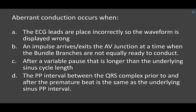Review question: 'Aberrant conduction occurs when ECG leads are placed incorrectly so the waveform is displayed wrong.' No — that's totally inaccurate. The correct answer is: 'An impulse arrives and exits the AV junction at a time when the bundle branches are not equally ready to conduct.' That is exactly the definition of aberrant conduction — the impulse still gets conducted down the bundle branches, just hits them at slightly different timing, creating the unique pattern. The other options — regarding variable pauses and P-to-P intervals — have more to do with identifying interpolated beats or compensatory pauses, and have nothing to do with aberrant conduction.